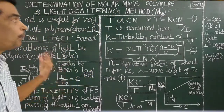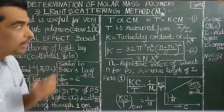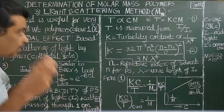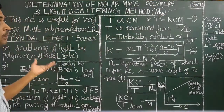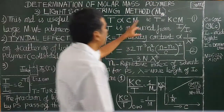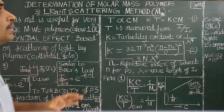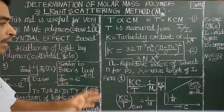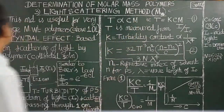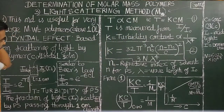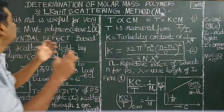Colligative properties depend on the number of molecules present. Unlike colligative property methods, the light scattering method is useful for very large polymers with very large molecular weight.